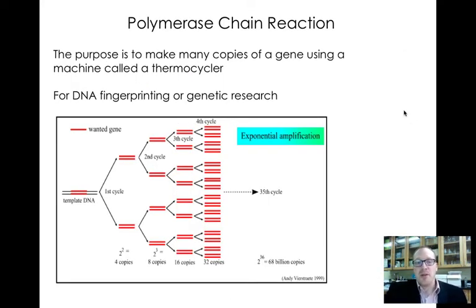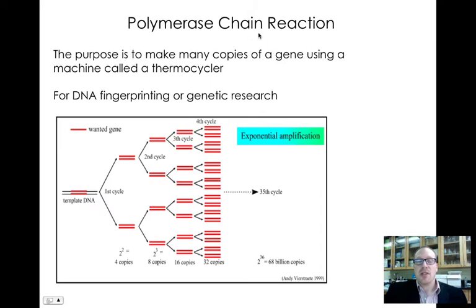The next step of producing your RFLP is polymerase chain reaction. Polymerase is an enzyme that polymerizes DNA nucleotides, and a chain reaction implies it keeps going and going. The purpose of PCR is to amplify — to make a huge amount of your DNA — so that you can study it further.